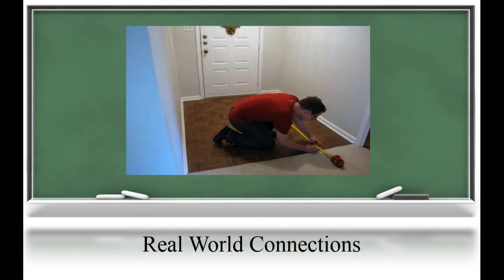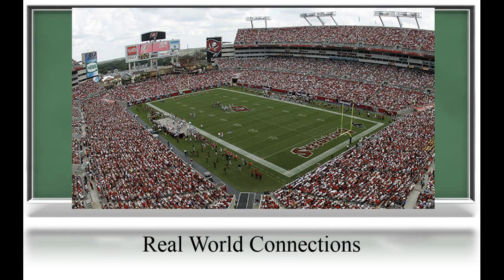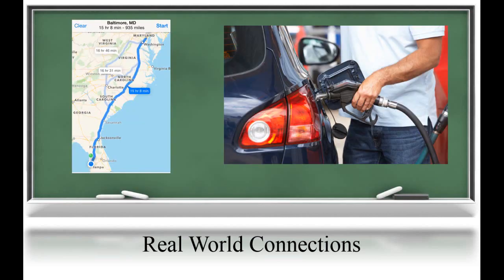We have some real-world connections for multiplication — the actual connections are absolutely endless, because multiplication is everywhere. You can use it when finding area. You can estimate the number of people at a ball game: if there are about 200 people in my section and there are 45 sections at Raymond James Stadium, about how many people are at Ray J? You can also use it when traveling with mileage: if my car gets 45 miles to the gallon and I have 18 gallons of gas, how far would I be able to travel?